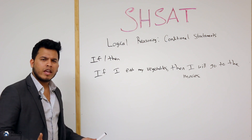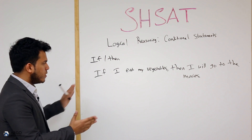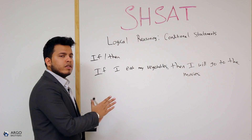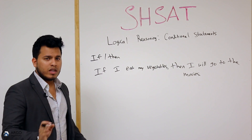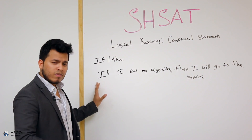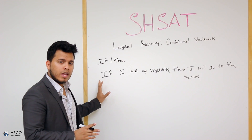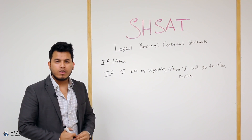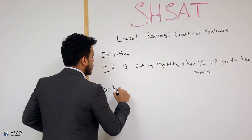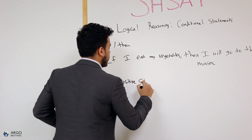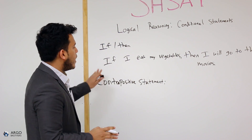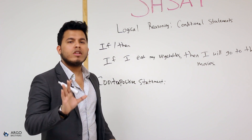How do we exactly draw a valid statement? The thing you have to understand — here's the easiest trick: even if this video is slightly confusing to you, pay attention to this part. All you have to do for these types of questions is take the contrapositive statement of the conditional statement. The contrapositive statement is the exact same thing as the conditional statement, and we do it in two ways.